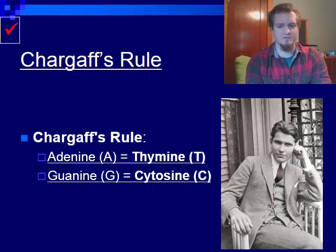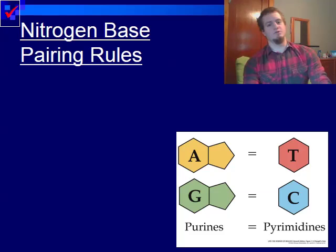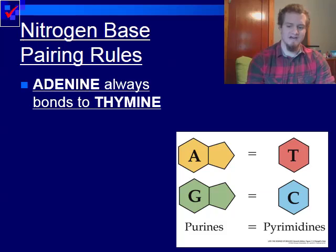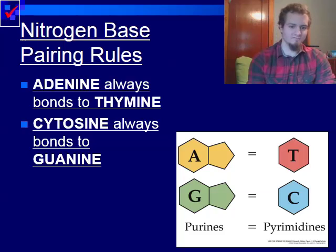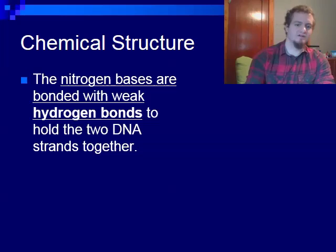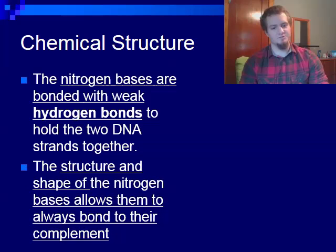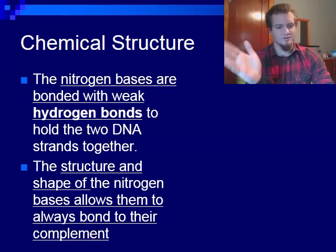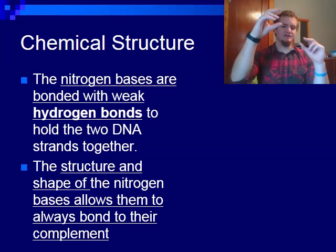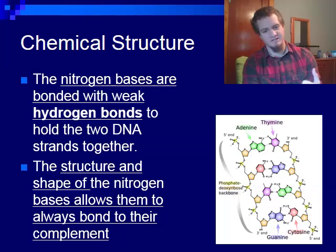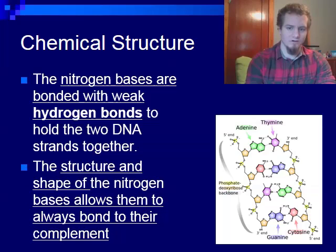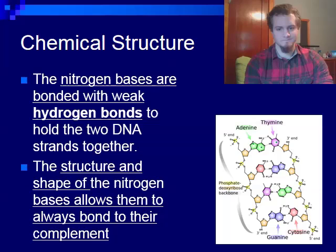The nitrogen base pairing rules: adenine will always bond to thymine, whereas cytosine will always bond to guanine. The nitrogen bases are bonded together with weak hydrogen bonds to hold the two DNA strands together. The structure and shape of the nitrogen bases always allow them to bond to their complement — A always pairs with T, and G always pairs with C. Adenine has two rings and thymine has one; guanine has two rings and cytosine has one. This way, we always get a nice, even set of rungs along the ladder.